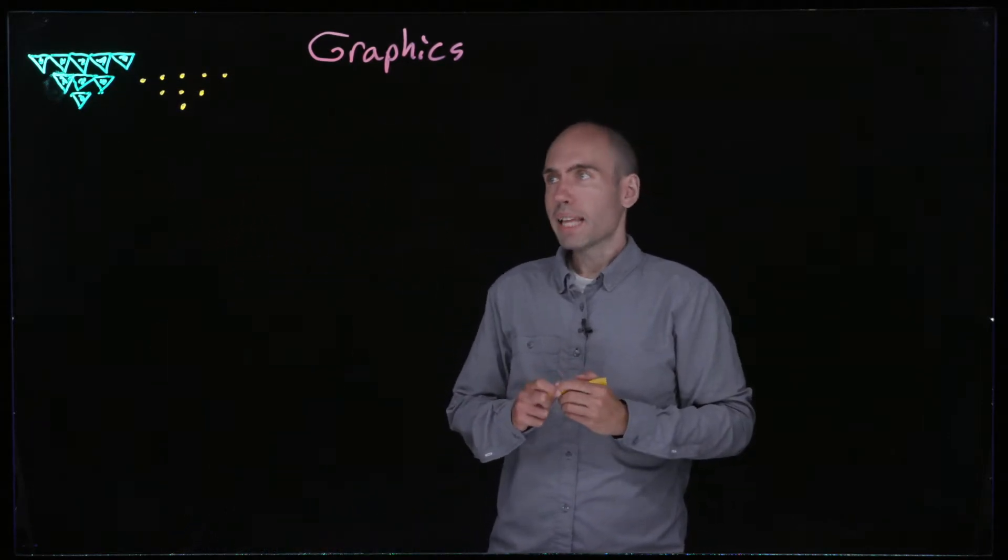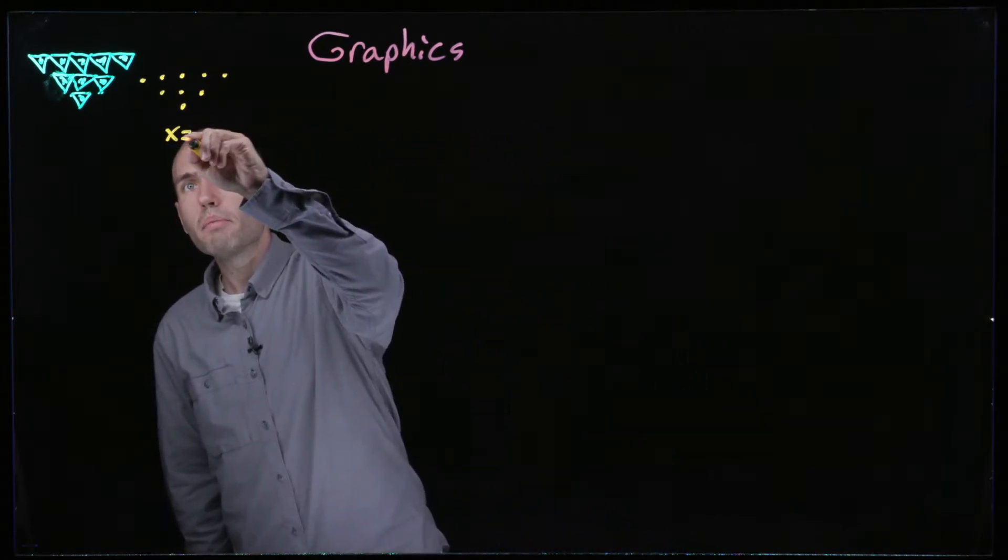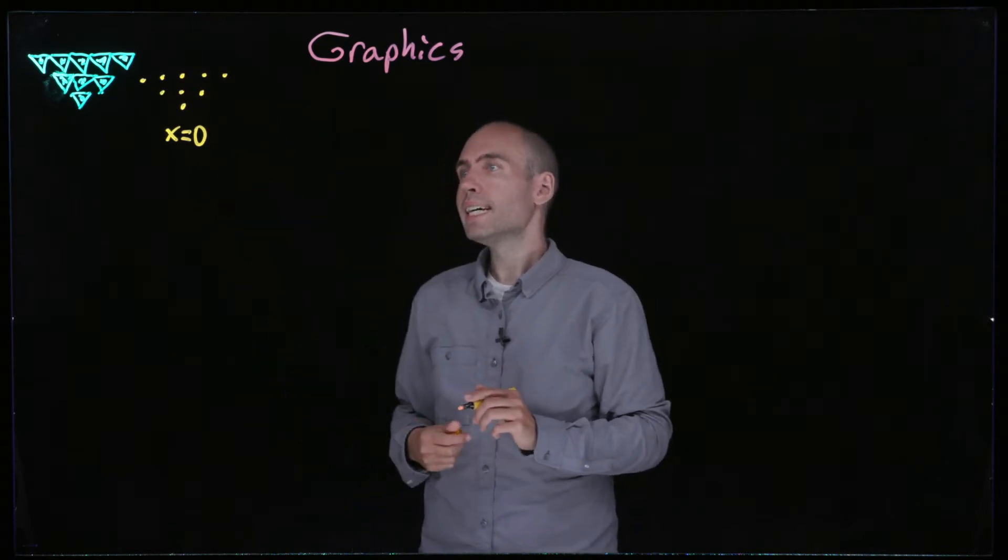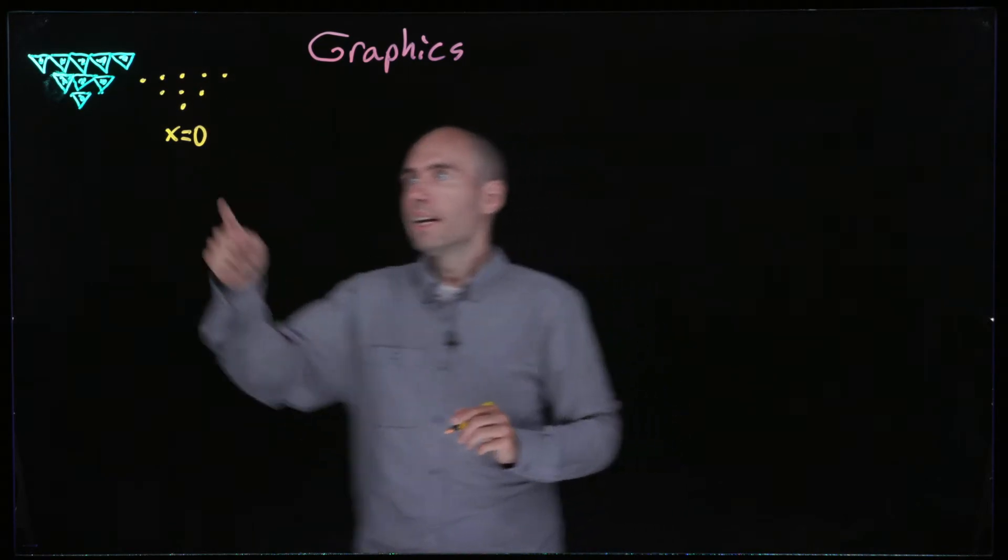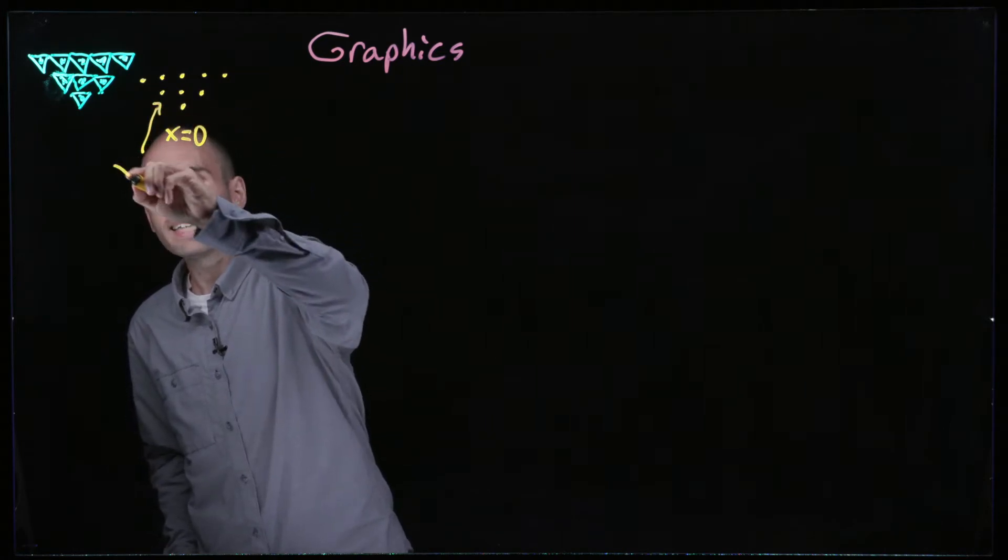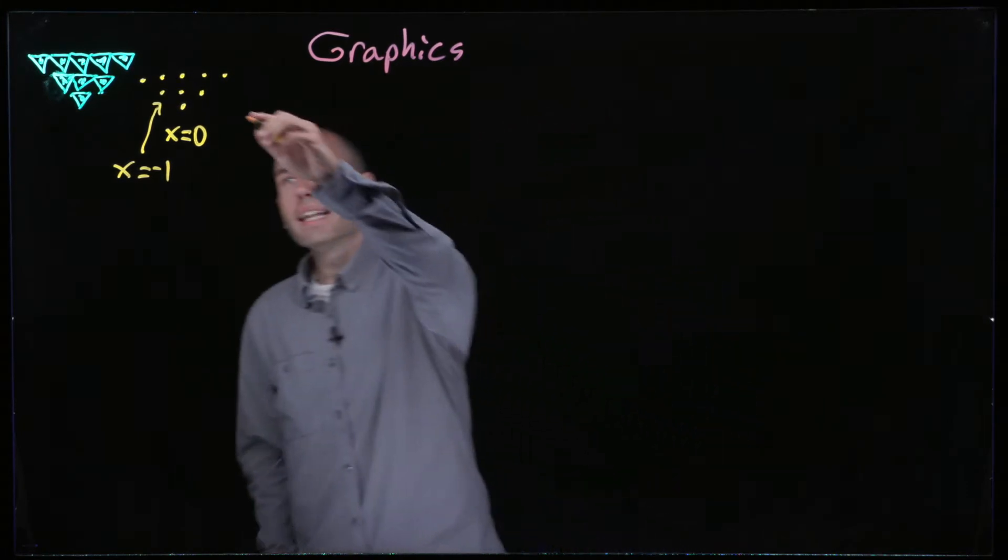Let me think about some labelings for these. Let me say that this middle column, this column of symmetry, is x equals zero. Then let's say this one, for example, is x equals negative one.